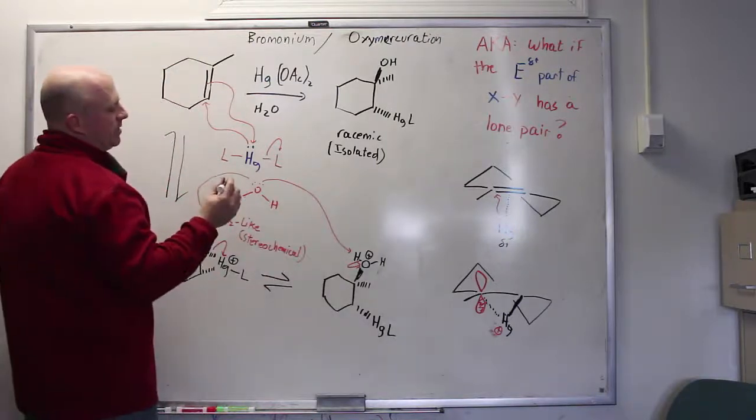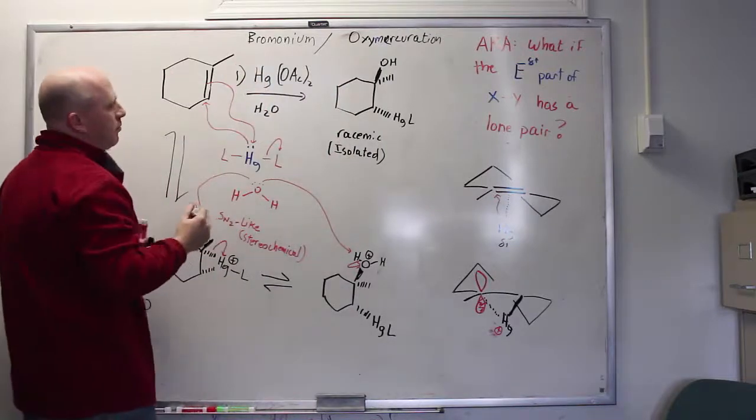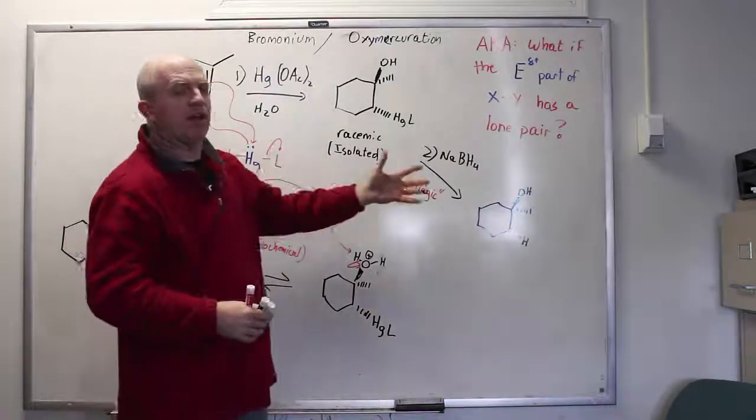I have this listed as isolated because we almost never care about the mercury product. Instead, this is merely step one of a two-step sequence. The second step in an oxymercuration reduction sequence is going to be a mechanism that I will call magic.